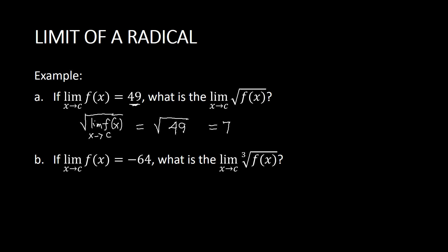Next, if the limit of f(x) as x approaches c is negative 64, what is the limit of the cube root of f(x) as x approaches c? We get the cube root of the limit of f(x), which is the cube root of negative 64. Since this is a cube root — an odd root — the answer is also negative, giving us negative 4.